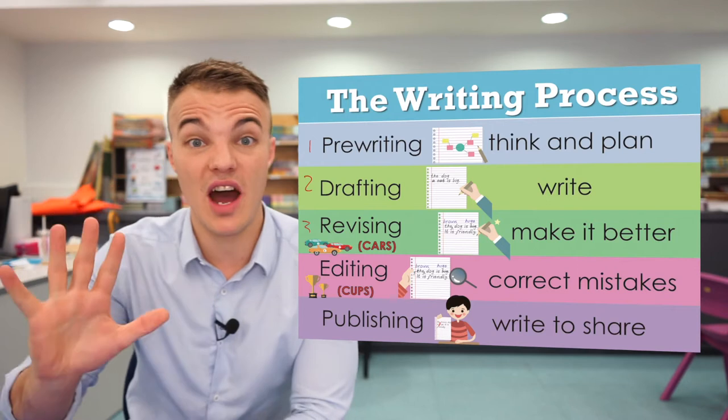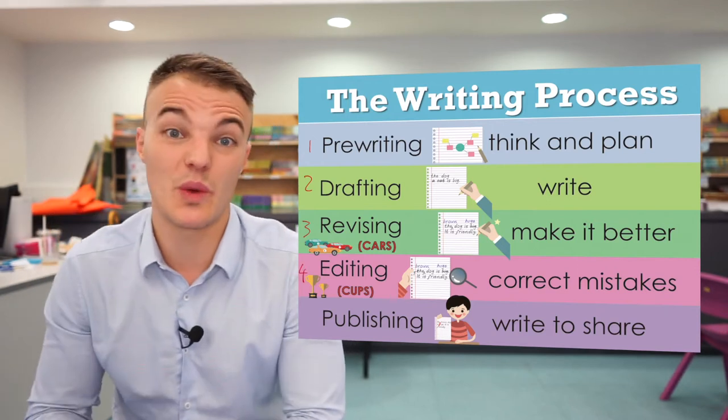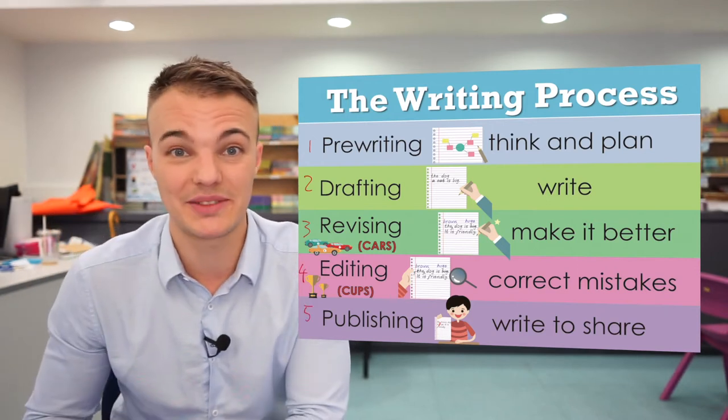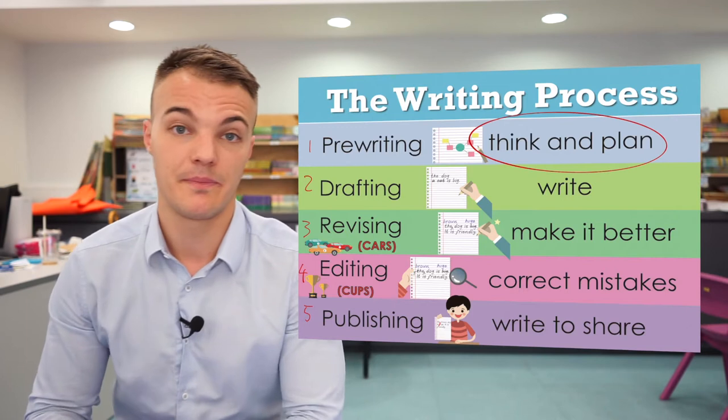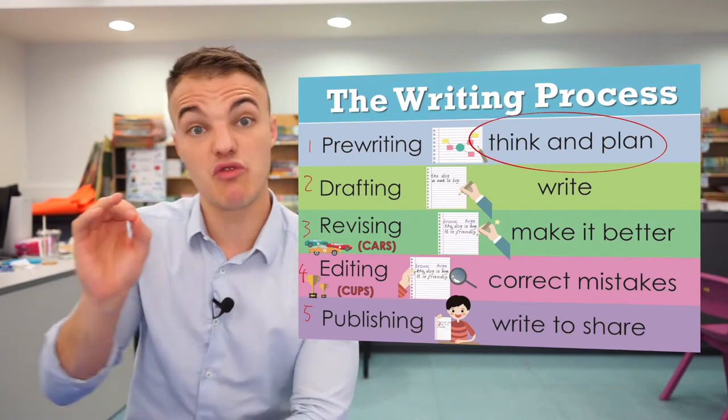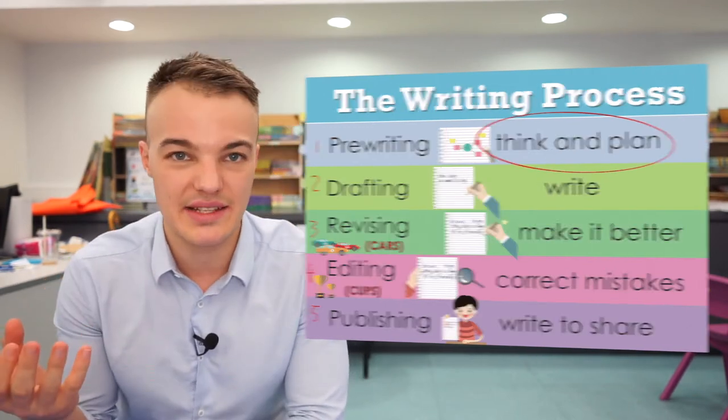Hi P2, I'm back in the English room today and we're going to do some writing together. Let's look at my process writing poster here. You can see that there are five steps when we do some writing. The first step is think and plan. That's when we write down the words that we will need for our writing.